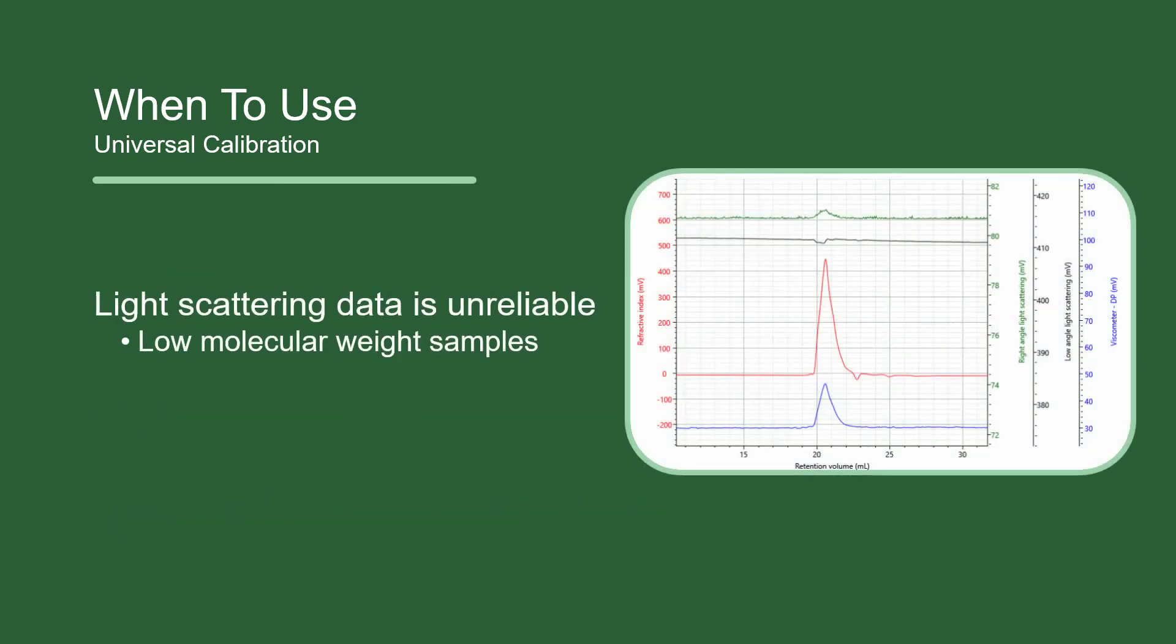Light scattering data can be unreliable for a few reasons. The light scattering response could be weak due to the sample's low molecular weight or low dn/dc value. Universal calibration can be used as an alternative as long as there is sufficient viscometer data.